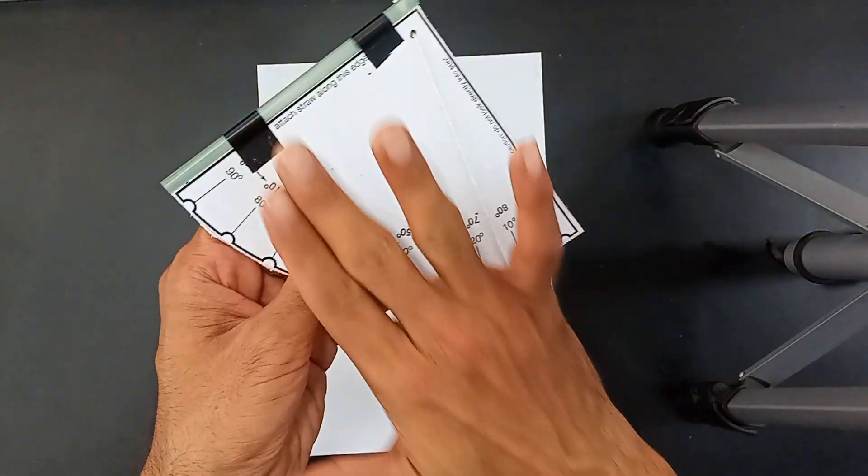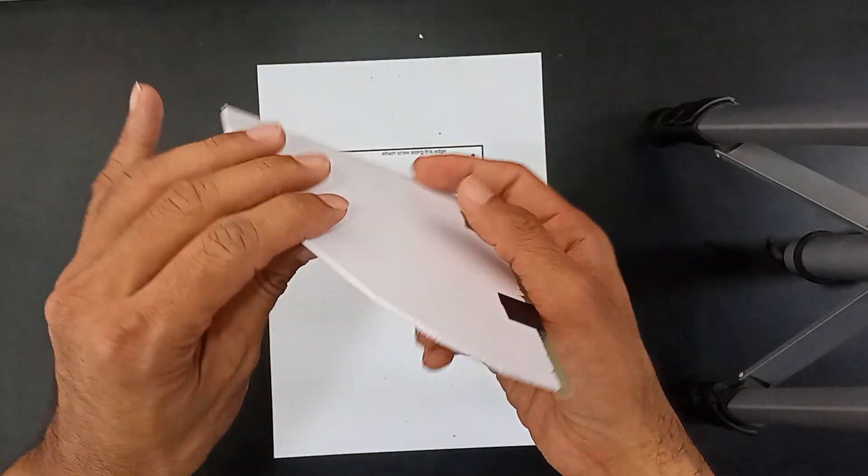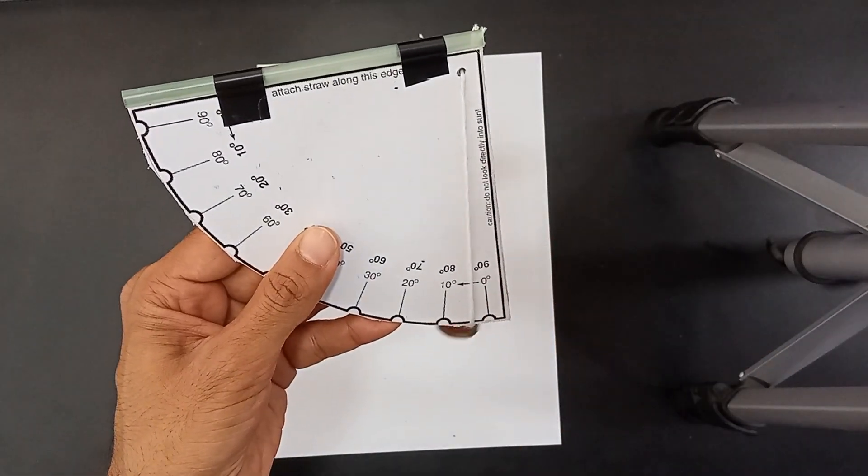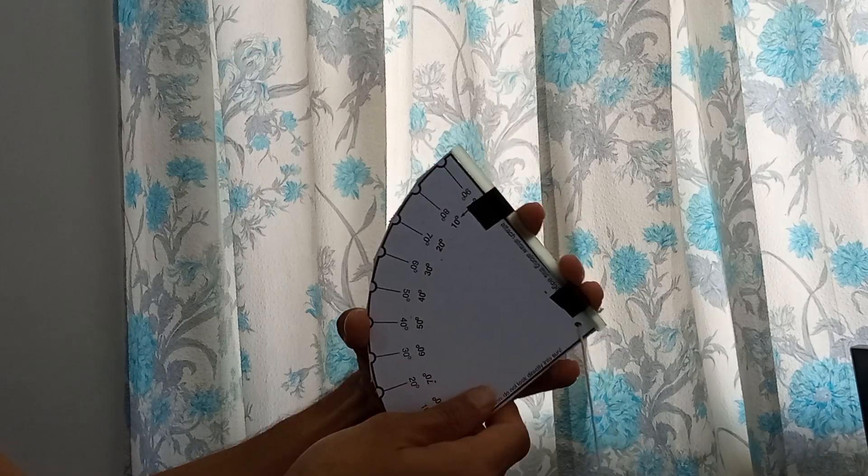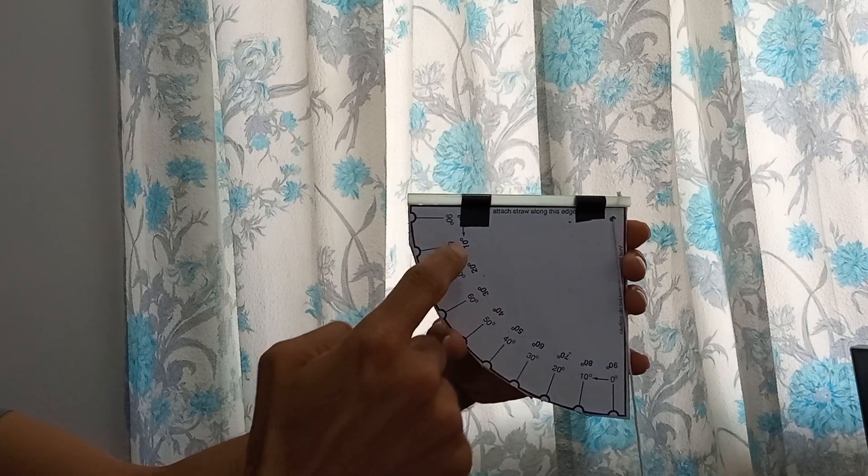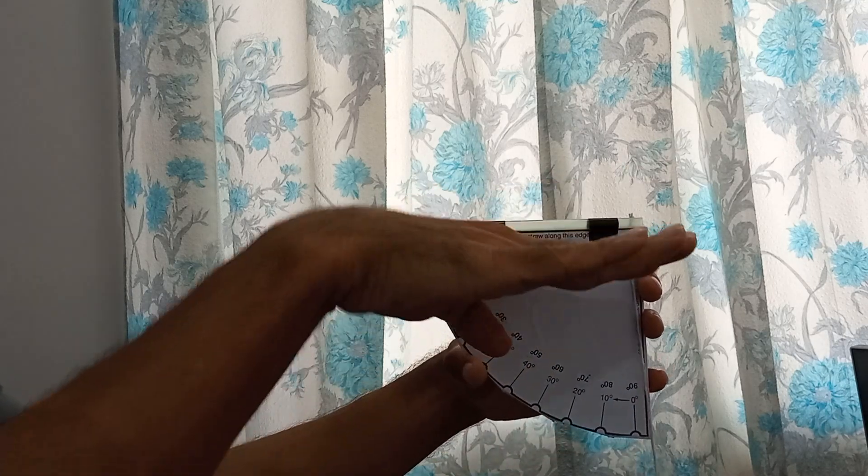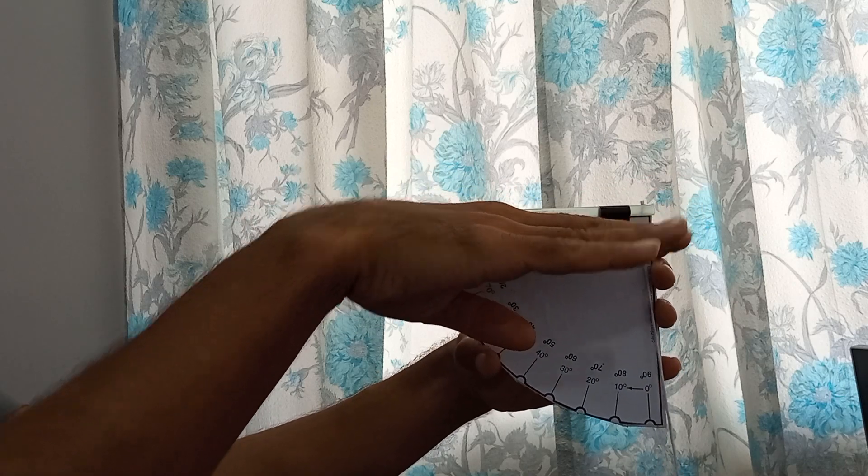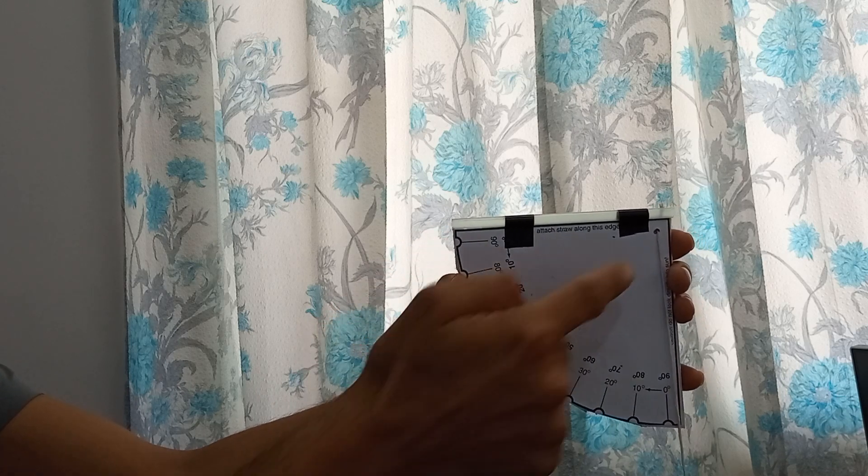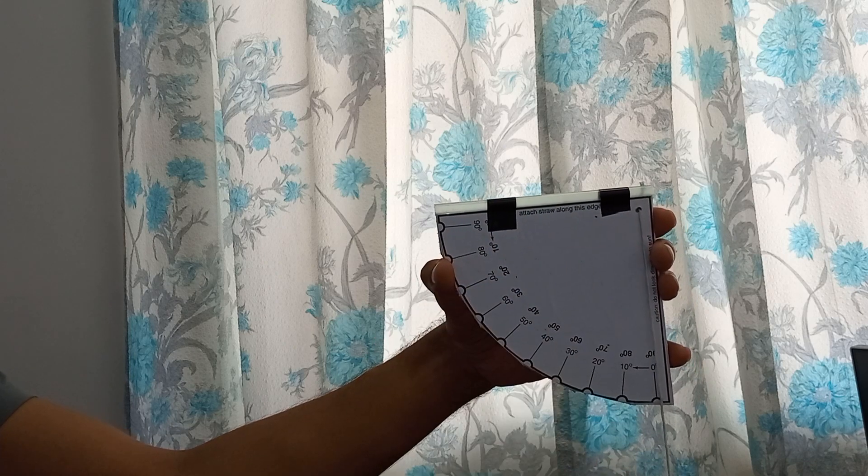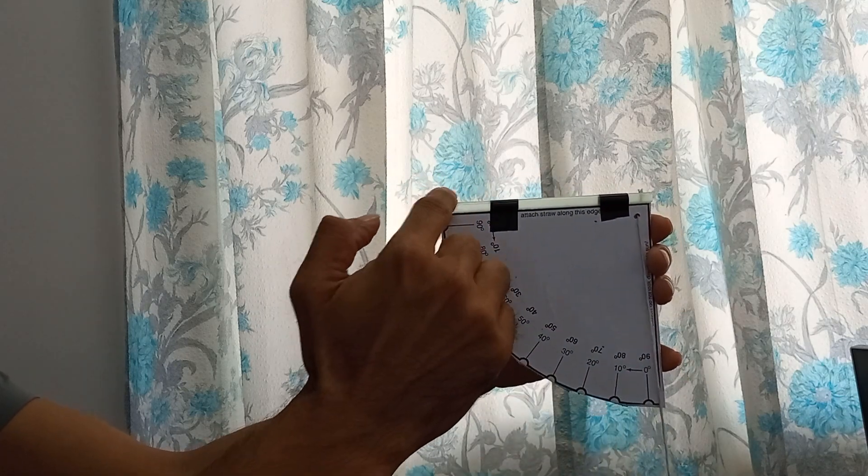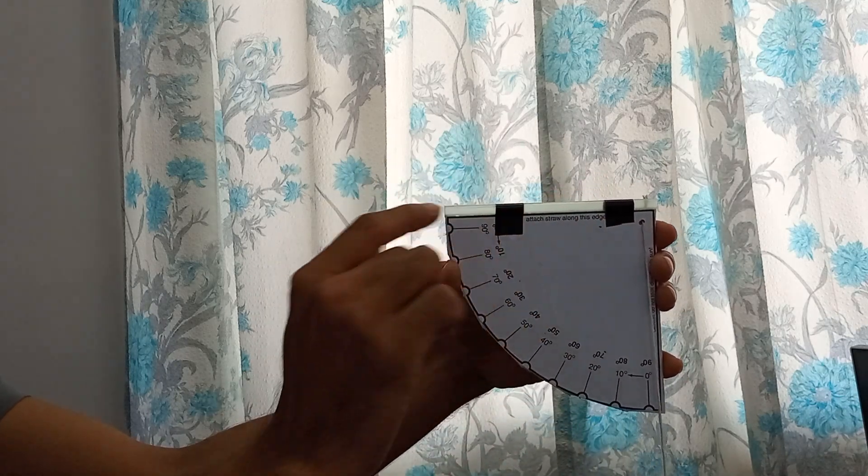Now we're gonna see how to use it to measure the angle of altitude of space objects. What you have to do is hold this astrolabe in a way that this straw is parallel to the earth's surface, horizontal completely. You have to look from here. This thread has to be hanging at 90 degrees to the earth's surface, perpendicular to this straw.